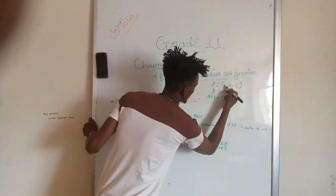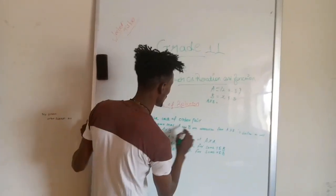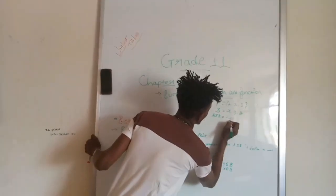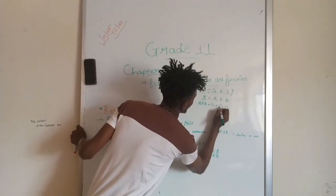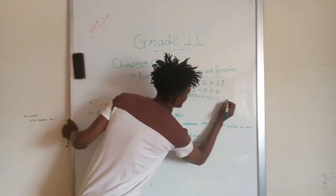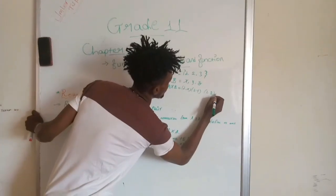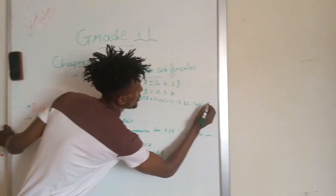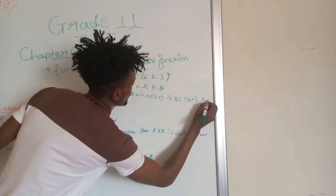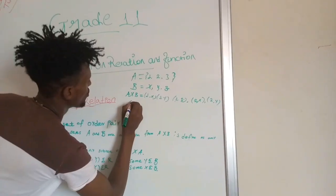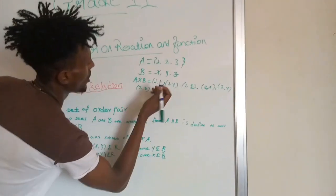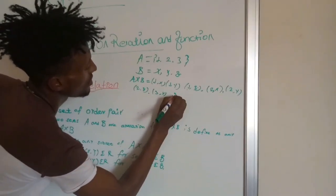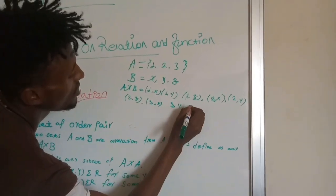The set of ordered pairs from A to B includes: (1, X), (1, Y), (1, Z), (2, X), (2, Y), (2, Z), (3, X), (3, Y), (3, Z).